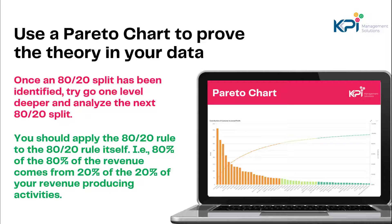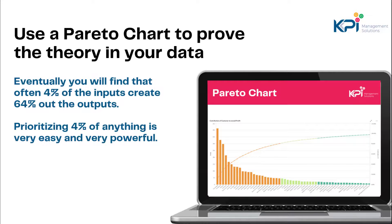Once you've got that 80/20 split, you can go one level deeper and analyze the next 80/20 split — effectively applying the 80/20 rule to the 80/20 rule itself. So 80% of the 80% of the revenue comes from 20% of the 20% of your revenue-producing activities. Eventually you can get down to something like 4% of your inputs creating 64% of your outputs, and prioritizing just 4% of anything is very easy but also very powerful.